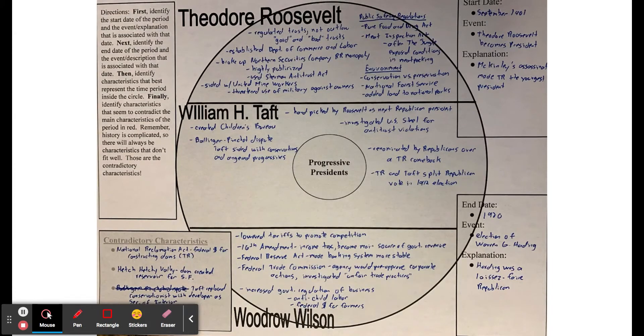He also investigated US Steel, which was the biggest steel company in the country, for antitrust violations. He also angered a lot of progressives with this Ballinger-Pinchot dispute, where Taft was siding with conservatives.